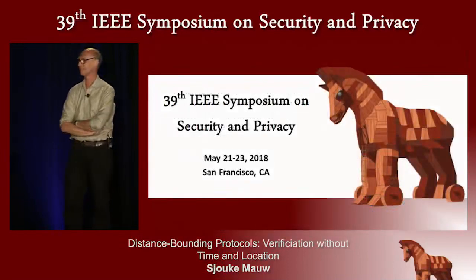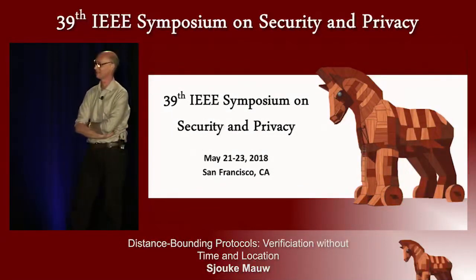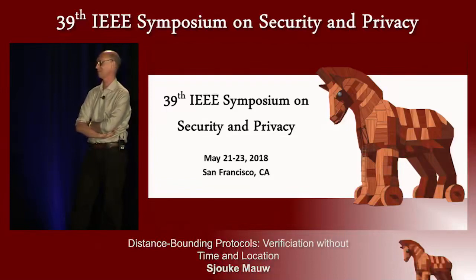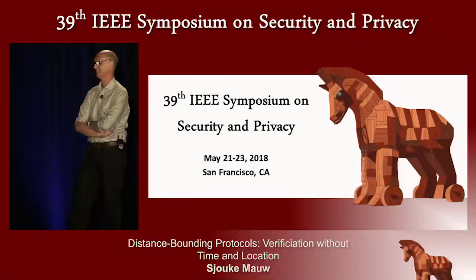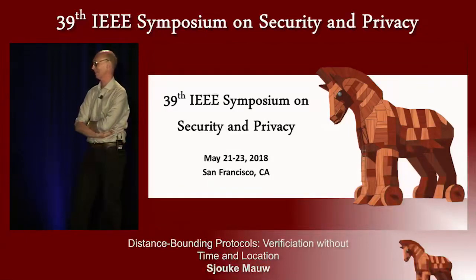Q: You mentioned two protocols where you found flaws — how unexpected were these? Were they the same type of flaw? A: They were quite unexpected. The PaySafe protocol is based on EMV, just extended with distance bounding, so I didn't expect errors there. The Threat protocol was proven correct by its authors using an existing proof method, but that method turned out to be incomplete. Finding errors in proven protocols was quite unexpected.